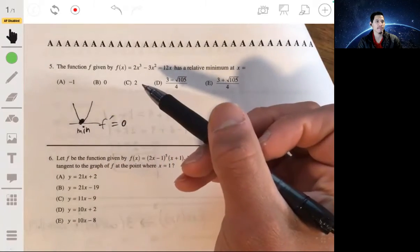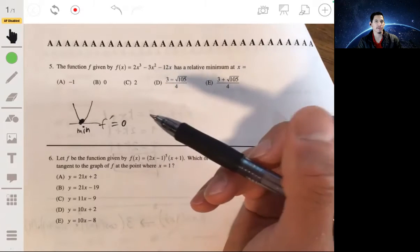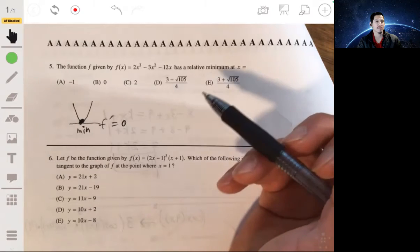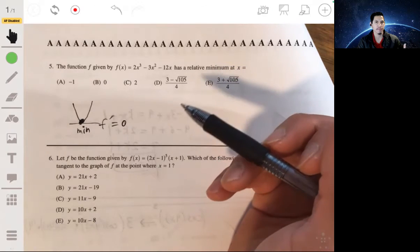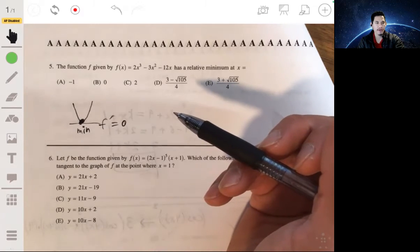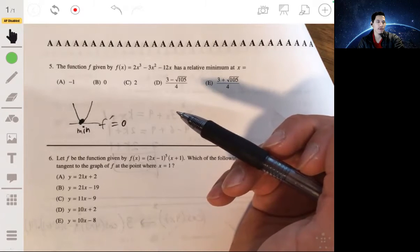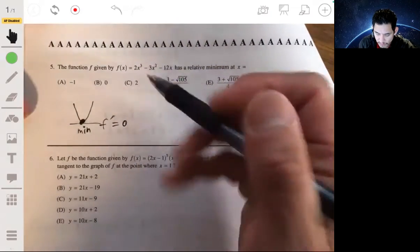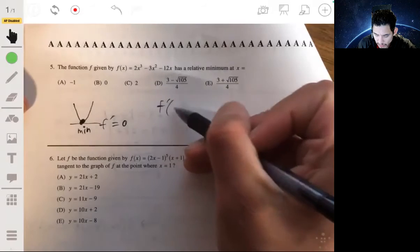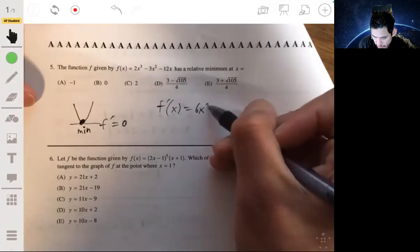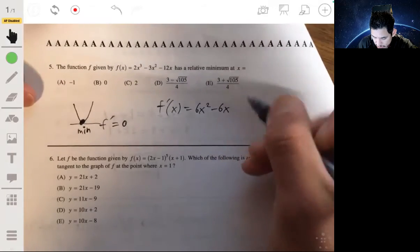So we want to take the derivative and find where there are potential critical points. And then to see if it has a relative minimum, there's a couple different ways you can do it. You can study the behavior of the derivative, or you can look at the second derivative. But first, let's just take the first derivative.